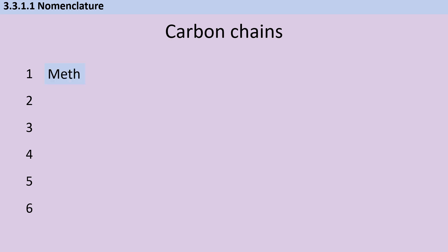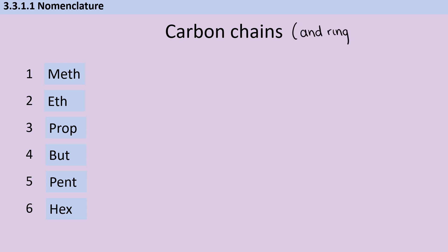One is meth, like methane. Two is eth. Three is prop. Four is but. Five is pent, like a pentagon. And six is hex, like a hexagon. Of course, we don't just have chains — we also have rings. Naming rings is really easy because you just include the prefix cyclo. So, for instance, cyclohexane looks like this.